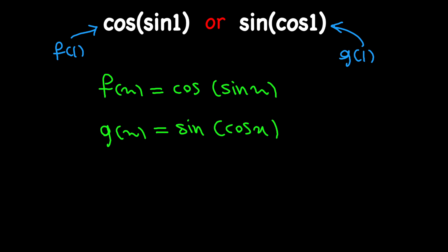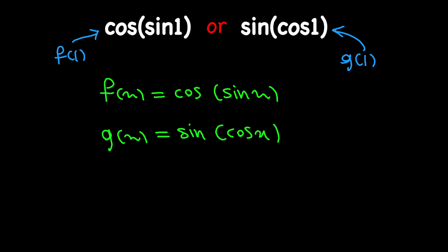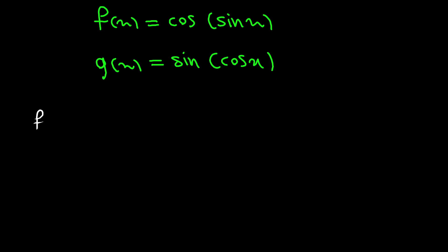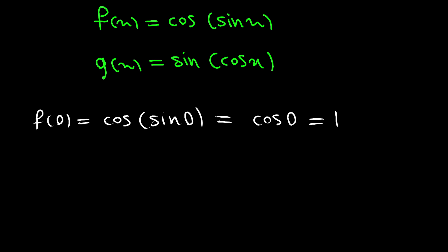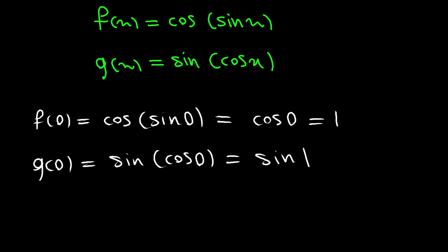By doing that, we're going to be able to compare f of 1 with g of 1 and say which one is the larger one. Now let's evaluate f of 0 and g of 0. So f of 0 is equal to cosine of sine of 0. Since sine of 0 is 0, this equals cosine of 0, which equals 1. And g of 0 is sine of cosine of 0, which equals sine of 1. Now we don't know the exact value of sine of 1, but we know that this is a quantity less than 1.